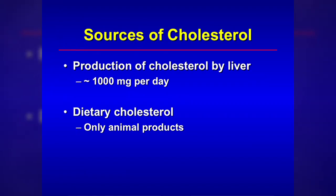So where does cholesterol come from? The vast majority of your cholesterol is produced in your liver, about a gram or 1,000 milligrams per day. Some individuals with genetic conditions may produce even more than that. The other way we get cholesterol is through the diet, and it's important to understand that cholesterol is only found in animal products. So if you're purely eating non-animal products, you really won't be getting much cholesterol in your diet.